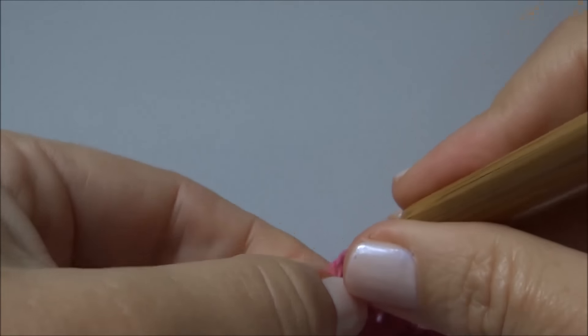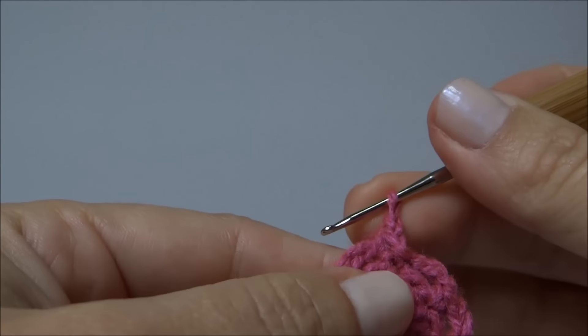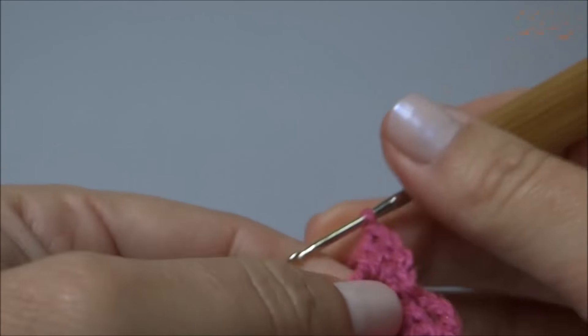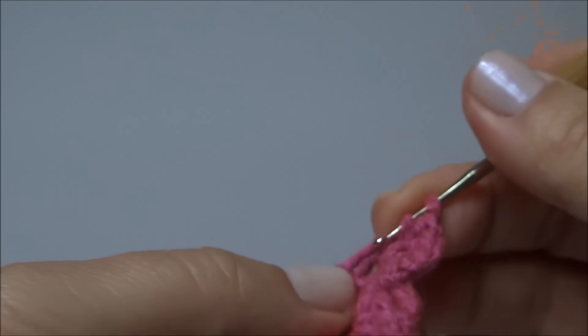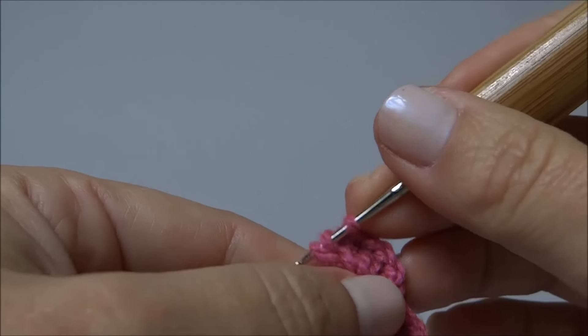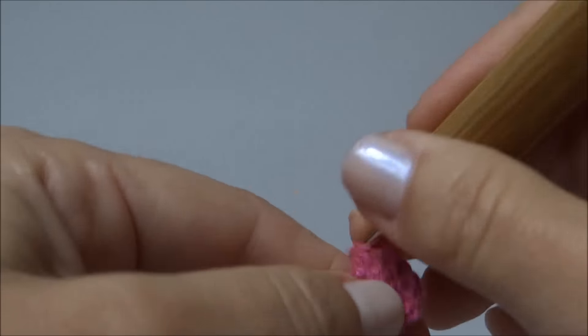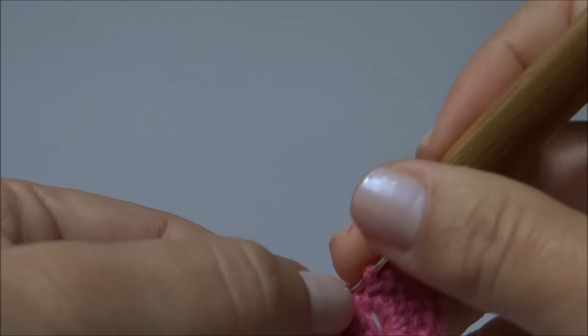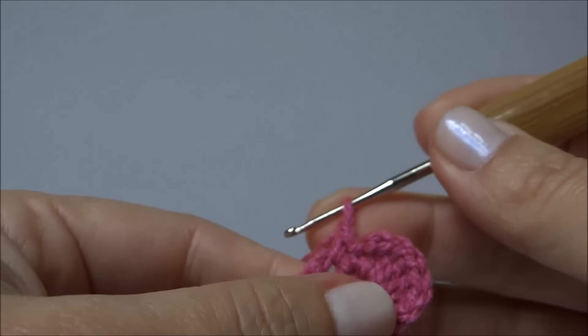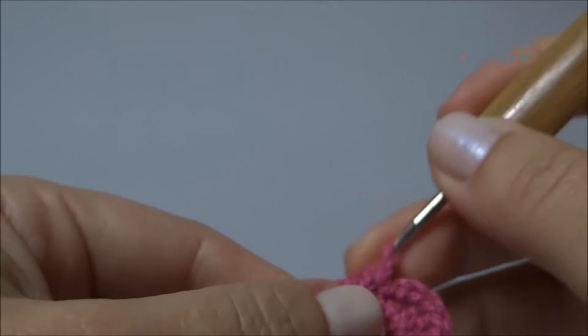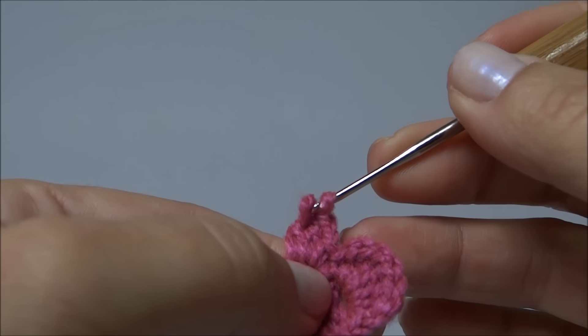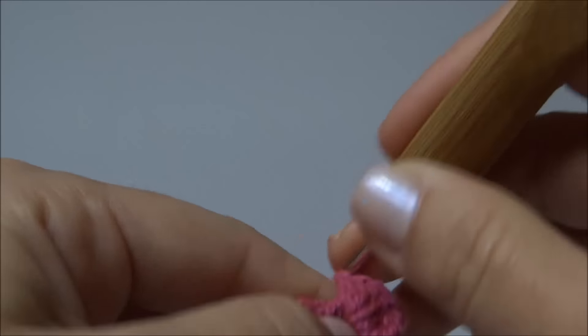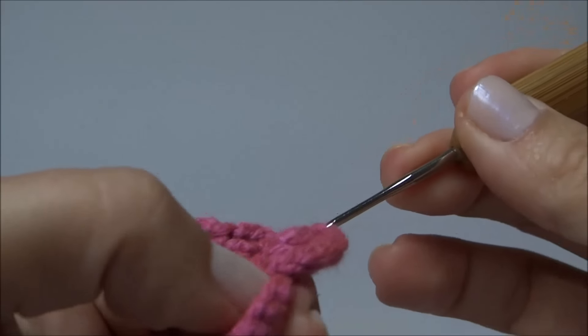Finalizei as seis argolas, vou dentro da primeira, faço um ponto baixo. Uma correntinha e trabalho cinco pontos altos dentro da argolinha. Dois, três, quatro, e cinco. Faço uma correntinha e dentro dessa mesma argola finalizo com um ponto baixo. Vou para próxima argolinha, um ponto baixo, uma corrente, faço cinco pontos altos. Um, dois, três, quatro, cinco, uma corrente e finalizo com um ponto baixo.